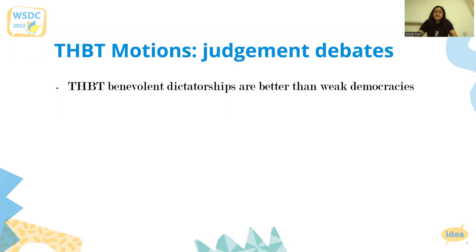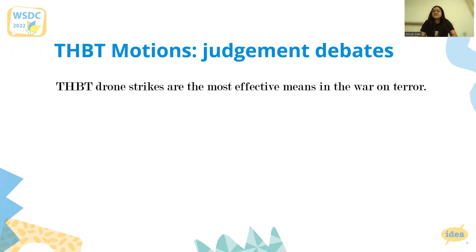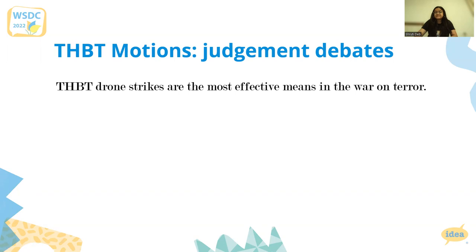For example, if the motion is 'This House Believes That drone strikes are the most effective means in the war on terror,' opposition teams can go ahead and choose a particular other form of war, or they can choose a mix and say any of these methods are still better than drone strikes.